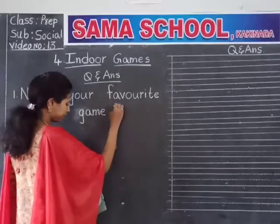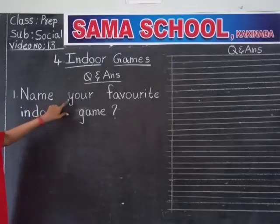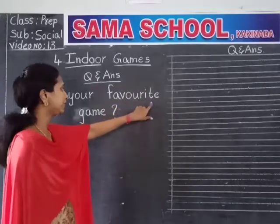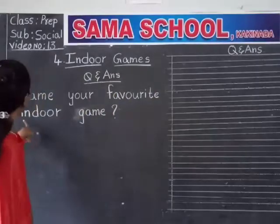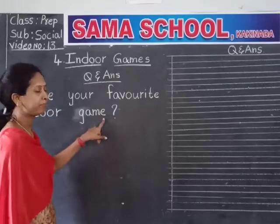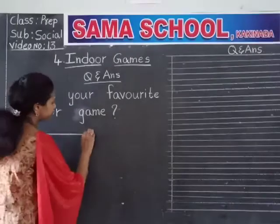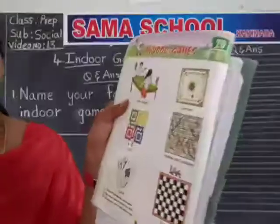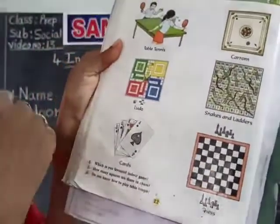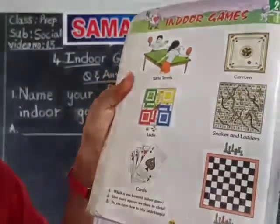Question 1: Name your favourite indoor game. There are so many options — table tennis, carom, ludo, snakes and ladders, cards, chess. Whatever you like, write that down. Now I am writing carom spelling as the example answer.